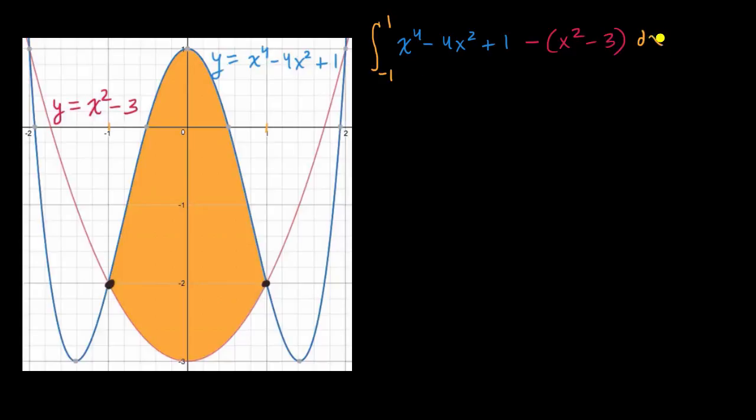we will subtract x squared minus three dx. And in many other videos, we have talked about why you do this, why this makes sense to just subtract the lower graph from the upper graph when you're finding the area between them. But now we just have to evaluate this definite integral. So let's just get down to business.